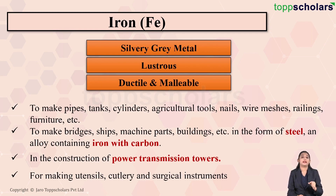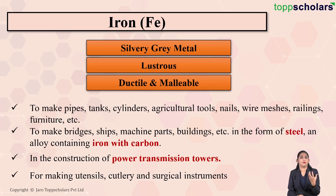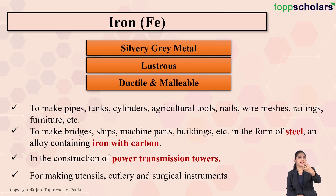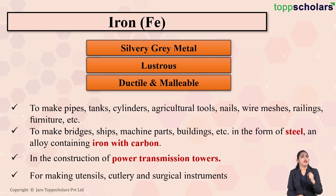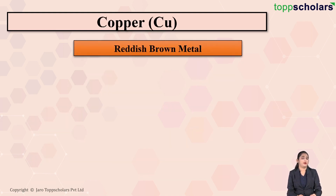Stainless steel is an alloy of iron that contains iron along with chromium and some amount of magnesium. So iron in the form of stainless steel is used for making utensils. Now let's move on to copper. Copper is a reddish brown metal.